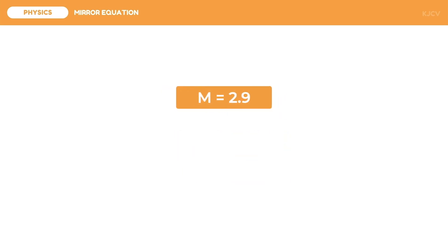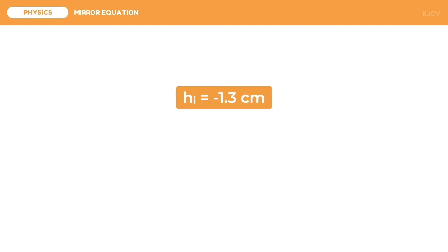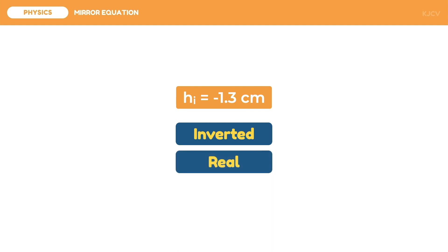Next, for a magnification of 2.9, we look at the absolute value to determine the qualitative size. Since it is greater than 1, the image is enlarged. The positive sign of the magnification value tells us the orientation — since it is positive, the image is upright. And since all upright images are virtual, the image is also virtual. For the last example, an image height of negative 1.3 cm does not give us qualitative magnification without the object height, but since it is negative, the image is inverted. And automatically, since all inverted images are real, the image is real.